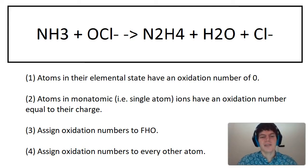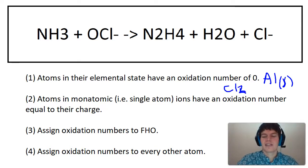Step one says the atoms in their elemental states have an oxidation number of zero. This would be an atom or an element like aluminum solid because that's its elemental state. That's the form you'd find it in in nature. Another example would be like Cl2 gas, because that's the way it'll naturally exist in nature. We don't have any of these in this equation, so we're not going to worry about it.